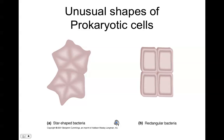Most prokaryotic cell shapes are very fundamental and geometric in structure. We do have some alternatives discovered in the last 20 years or so. There are some star-shaped bacteria that are essentially little triangles wedged together, and rectangular prokaryotic bacteria have also been discovered, but that's pretty much the limit of shapes used to describe prokaryotic cell structure.